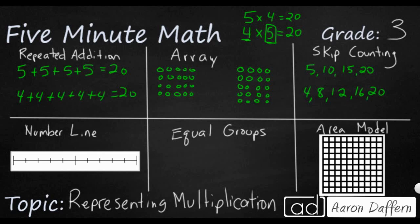If I wanted to do a number line, it's going to be a lot like skip counting — it's going to look like equal skips. You'll notice my number line is not labeled. What I would do is make one, two, three, four skips. I need to label each of them: I'm going to skip from five to 10 to 15 to 20, always starting at zero. That's how you can show equal groups on a number line.